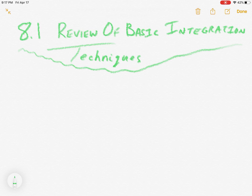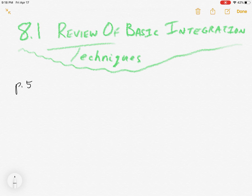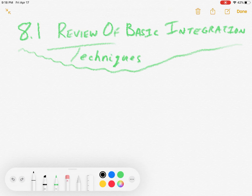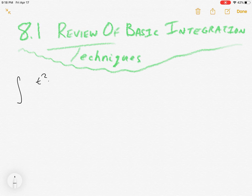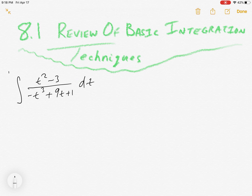Welcome back to calculus. This section is the review of basic integration techniques, and we're going to move through this pretty quickly. Each of these problems is pretty unique and just kind of builds back up from chapter five techniques before we get into some more advanced techniques starting at 8.2. The first problem is: the integral of (t² - 3) over (-t³ + 9t + 1) dt.